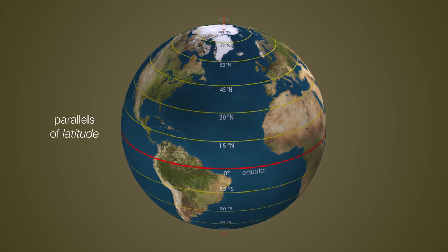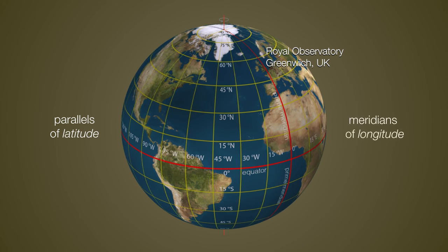Now in addition to parallels of latitude measuring north and south, we also want to be able to measure from east to west. So by international agreement, the prime meridian is an imaginary line that goes through the North Pole, through Greenwich, England at the Royal Observatory, all the way down to the South Pole. And then we can simply measure east or west in terms of meridians of longitude.